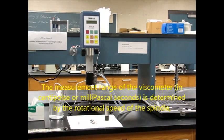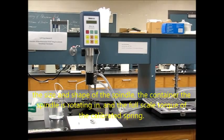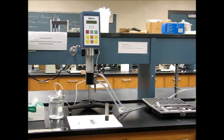The measurement range of the viscometer in centipoise, or millipascal seconds, is determined by the rotational speed of the spindle, the size and shape of the spindle, the container the spindle is rotating in, and the full-scale torque of the calibrated spring.